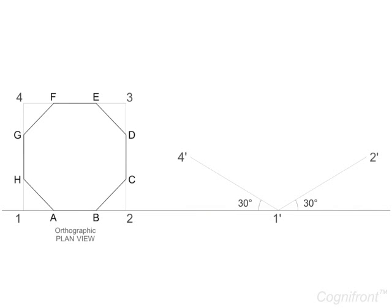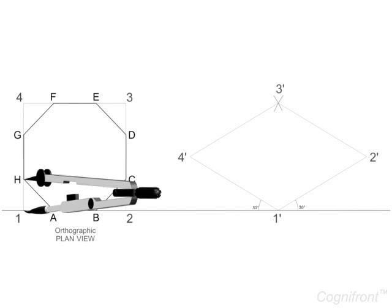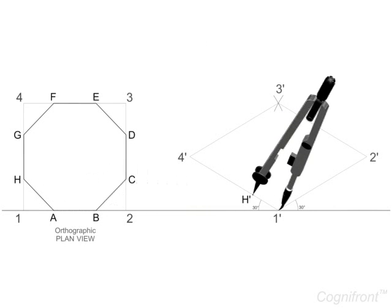These axes make angles of 30 degrees with XY. Then complete the parallelogram 1'-2'-3'-4'. From point 1', mark side of the octagon A'-H' along the isometric axis. Observe the steps carefully.